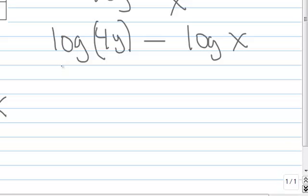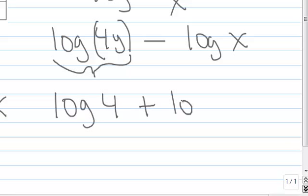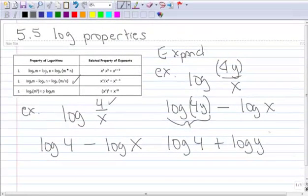Now what I'm going to do is I'm going to look at just this piece right here and I'm going to say, hey, I've got two things multiplied together. So I can separate these by writing it as the log of 4 plus the log of y. And then of course I still have this piece on the end, minus the log of x.